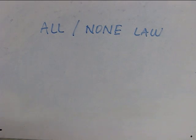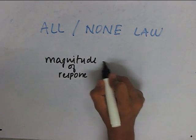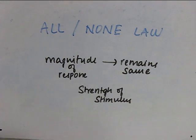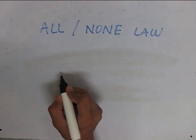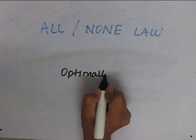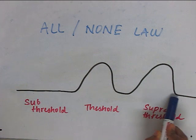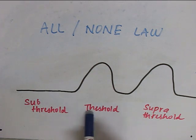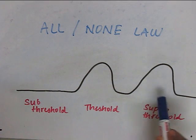The next important property is the all-or-none law. The all-or-none law suggests that the magnitude of response remains the same irrespective of the strength of the stimulus. It means that if a stimulus is given to a muscle fiber, it either responds optimally or it does not respond at all. If a sub-threshold stimulus is given, there is no contractility at all. But if a threshold or optimal stimulus is given, there is a response. And if a higher stimulus is given, the magnitude of response is equal to that of the threshold one.